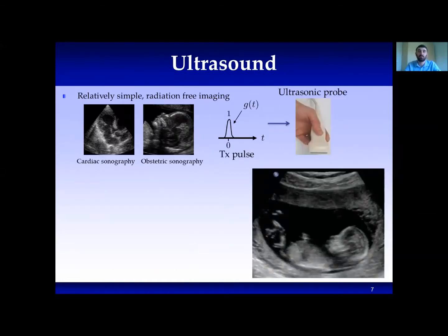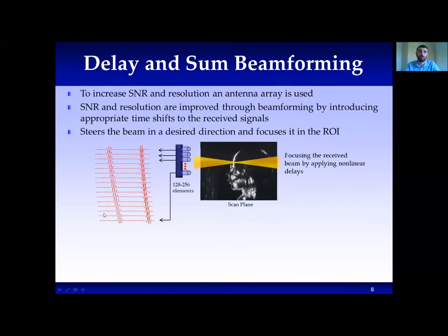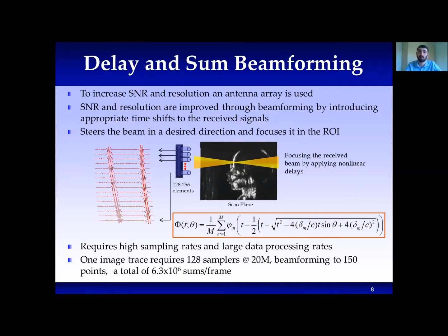Ultrasound imaging is performed by sending a pulse to the tissue. Echoes are then received from scattering elements in the tissue, with time delays corresponding to their depth. The final image is formed line by line based on the direction and amplitude of the scatterers. The most common method used is delay and sum, where an array of transducers is used, resulting in better SNR and image resolution after applying appropriate time shifts to the received signals.